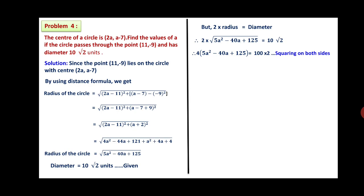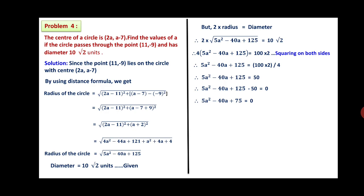Simplifying: radius = √[5a² - 40a + 125]. The diameter is 10√2, so radius = 5√2. Squaring both sides: 5a² - 40a + 125 = (5√2)² = 50. Wait — diameter is 10√2, so radius = 5√2; squaring gives 5a² - 40a + 125 = 50. Bringing 50 to the left: 5a² - 40a + 75 = 0. Dividing by 5: a² - 8a + 15 = 0.